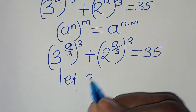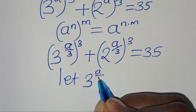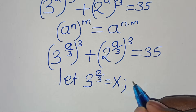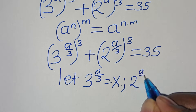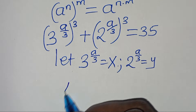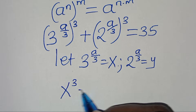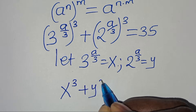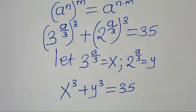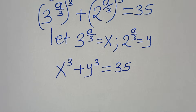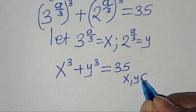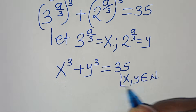The next step is to let 3 to the power of a over 3 be equal to x, and 2 to the power of a over 3 be equal to y. So now we have x cubed plus y cubed equal to 35, where x and y are elements of the natural numbers.